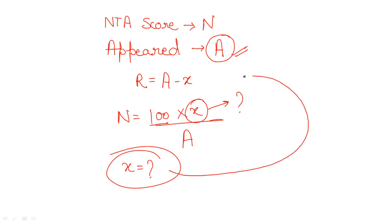Once you have the value of x, plug it into the rank formula: Rank = number of appeared students − x. This gives you the general or overall rank. If you want a category-wise rank, you follow the same process but with different data.